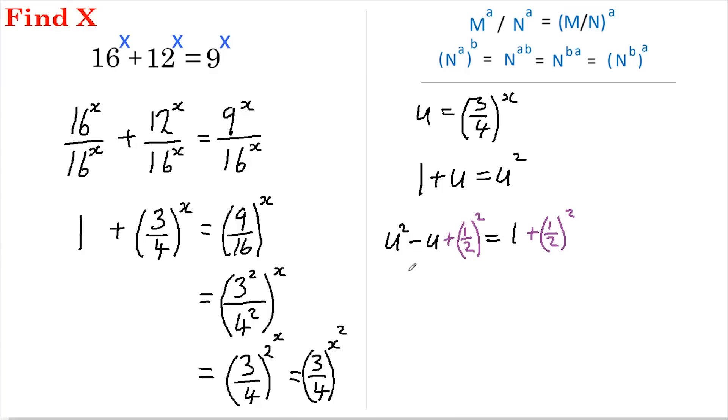Having done that the left hand side easily factorizes and it becomes we take this u, we take this sign, and we take this half and that's all squared, and that equals 1 plus half squared which is a quarter.